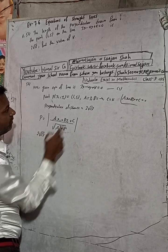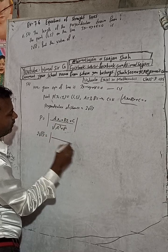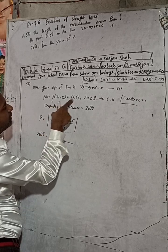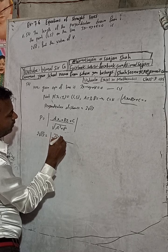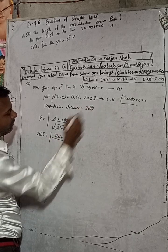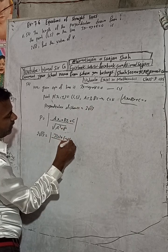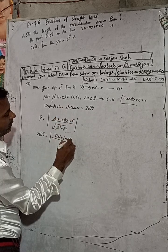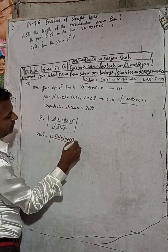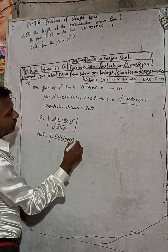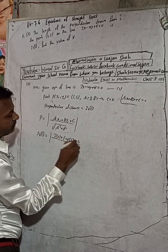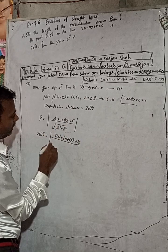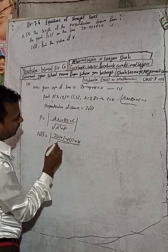So substituting: a equals 3, and x₁ equals 1, so we have 3 times 1; then b equals minus 4 and y₁ equals 5, so minus 4 times 5; then plus c which is k. In the denominator, a² is 3 squared plus b² which is minus 4 squared.